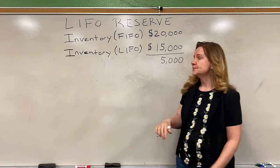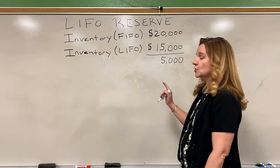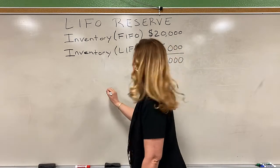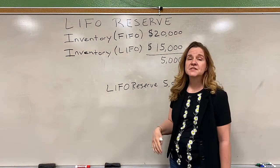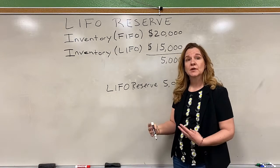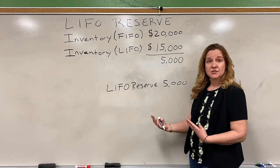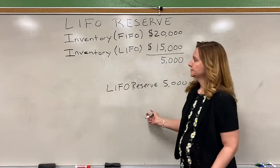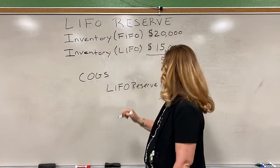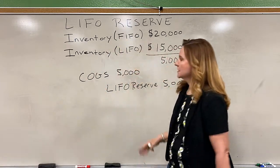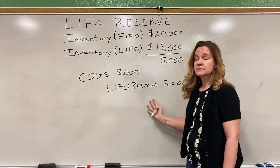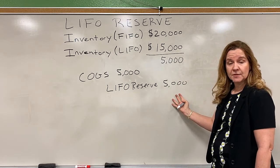So we're going to credit the LIFO reserve for the $5,000. The offset account is going to be cost of goods sold, because that's where it would have gone. So we will debit that account. That's the adjustment we would make at year end to adjust to LIFO.